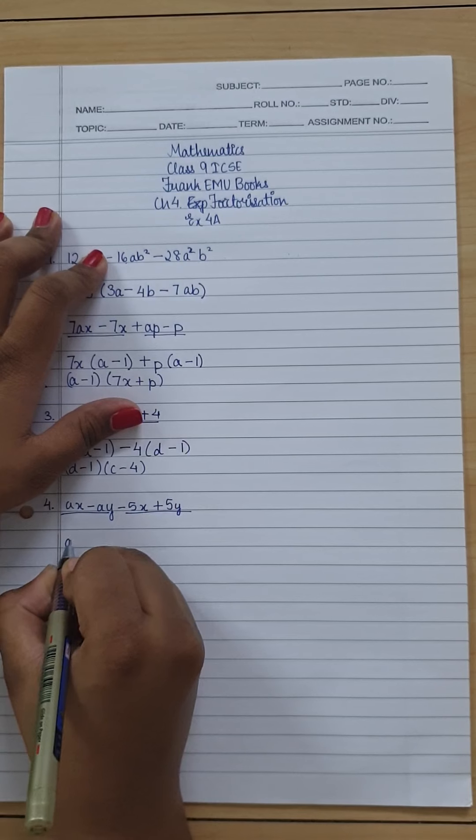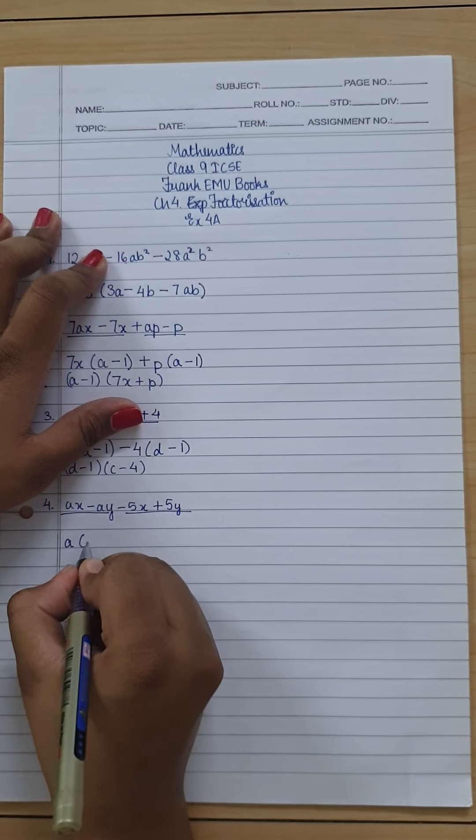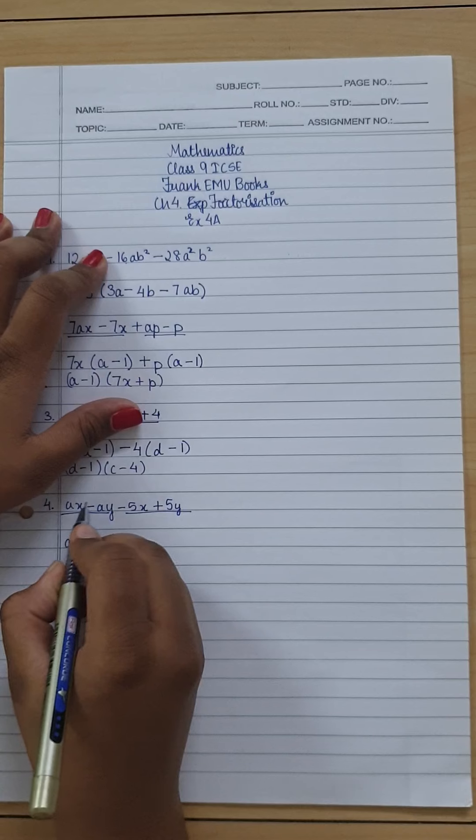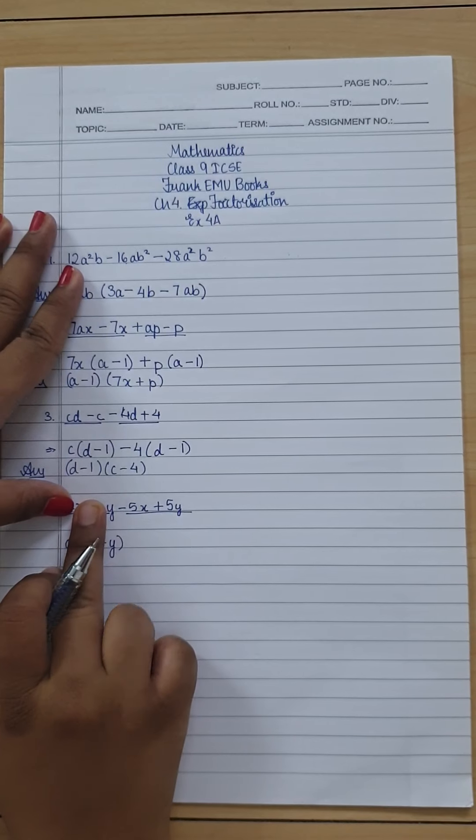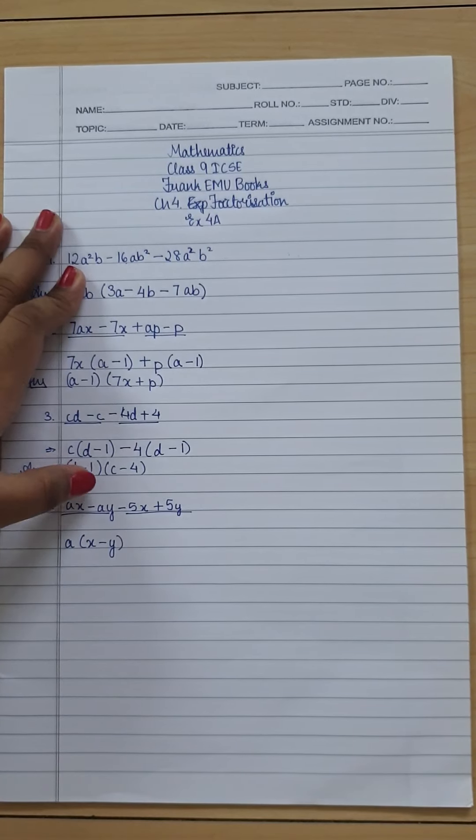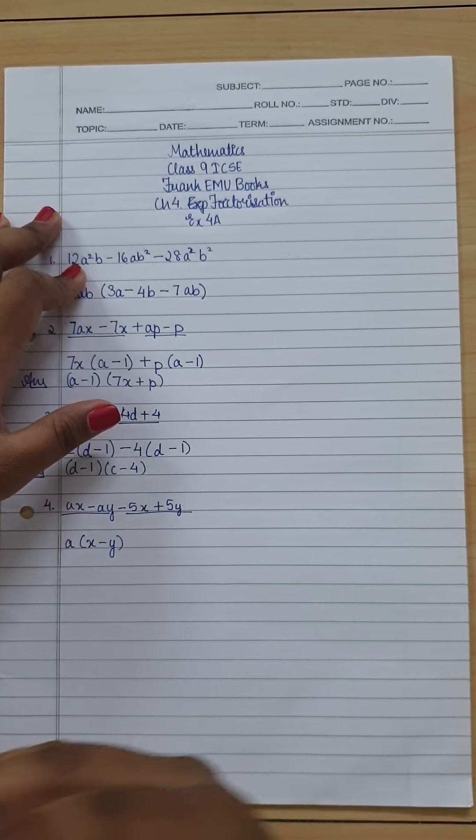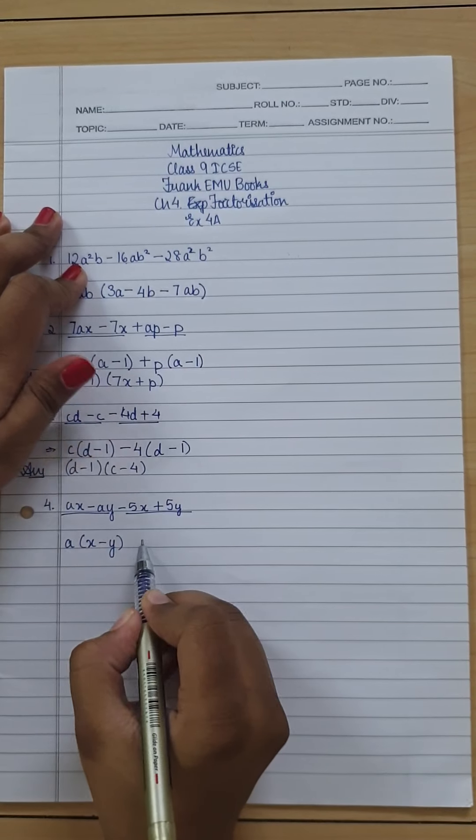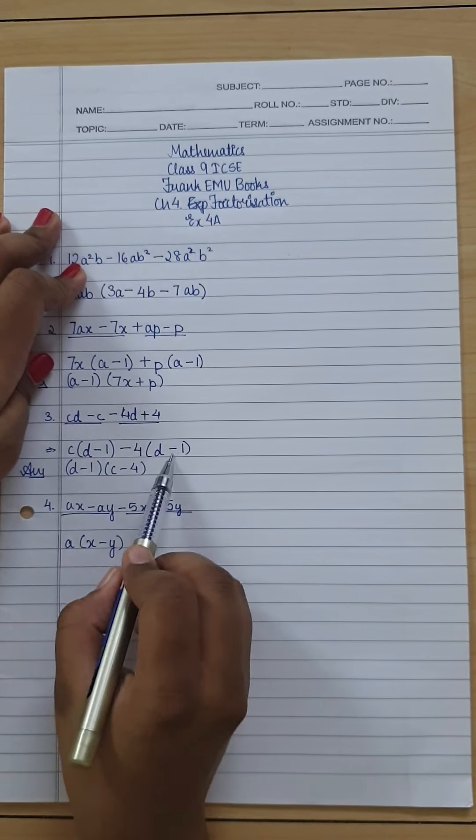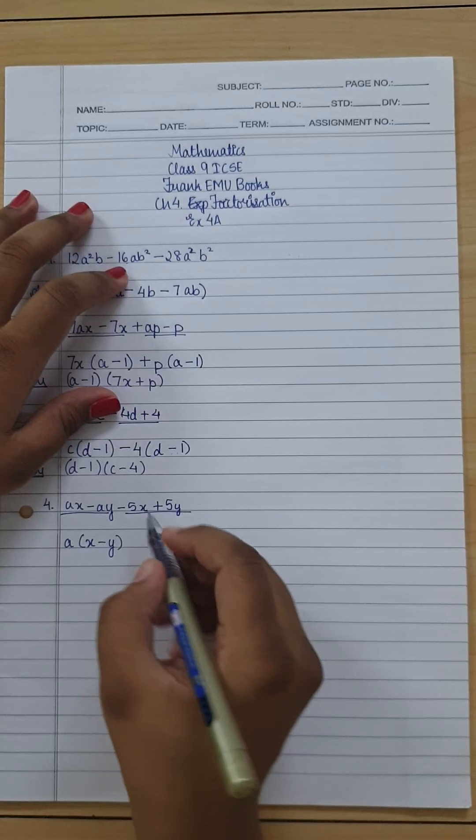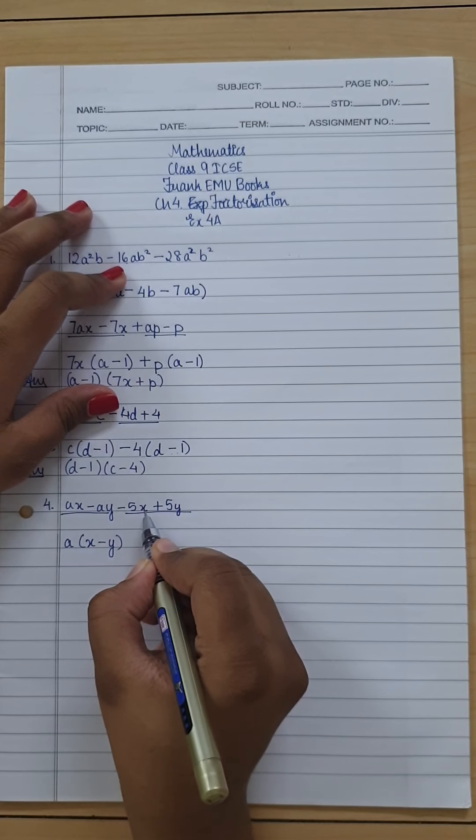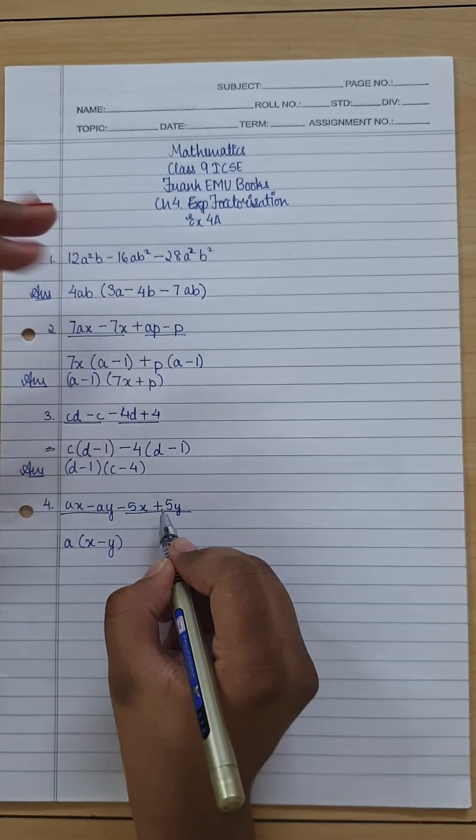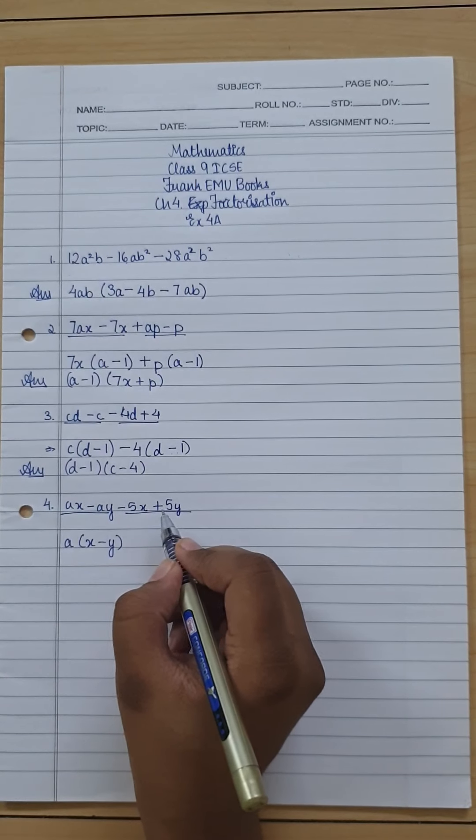So I'm having a as a common factor in this, so I take a out. What remains is x - y in the bracket, because if I take a out of both the terms, what remains is x and y and the sign in between is minus. Now to get these terms together, because the terms inside the bracket have to be the same, and if I take 5 out of this I get -x + y. So that's what I get, but I want to get the signs opposite.